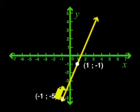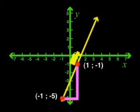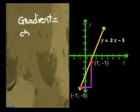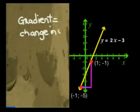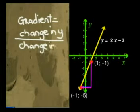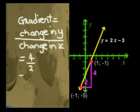Imagine you are walking on the graph. You walk from this point, negative 1, negative 5, to this point, 1, negative 1. Walking up the slope, you have moved from negative 5 to negative 1 on the y-axis. That's four steps. And you moved from negative 1 to 1 on the x-axis. That's two steps. We calculate the gradient of the slope like this. You find how much you have moved on the y-axis. That's the change in y. And divide this by how much you have moved on the x-axis. That's the change in x. So here we get 4 and here we get 2. 4 divided by 2 gives us a gradient of 2.